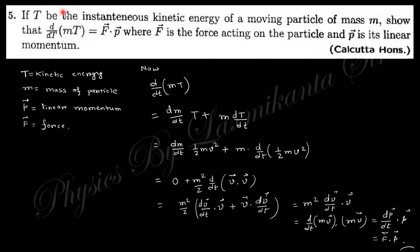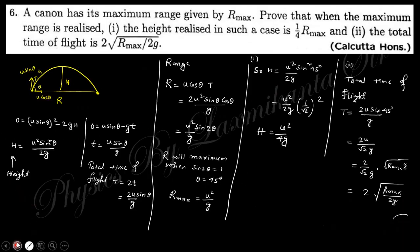Question five: if T is the instantaneous kinetic energy of a moving particle of mass m, show that d/dt(mT) = F·p. Since T = half·m·v², we have d/dt(mT) = m·dT/dt = m·(half·m·d(v·v)/dt) = m·v·(m·dv/dt) = p·(dp/dt) = p·F = F·p.